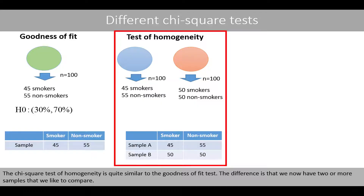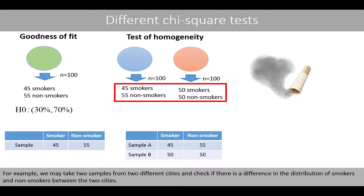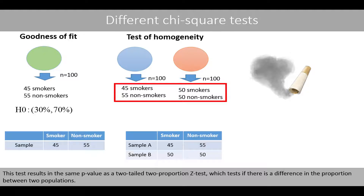The chi-square test of homogeneity is quite similar to the goodness of fit test. The difference is that we now have two or more samples that we like to compare. For example, we may take two samples from two different cities and check if there is a difference in the distribution of smokers and non-smokers between the two cities. This test results in the same p-value as the two-tailed two-proportion z-test, which tests if there is a difference in the proportion between two populations.